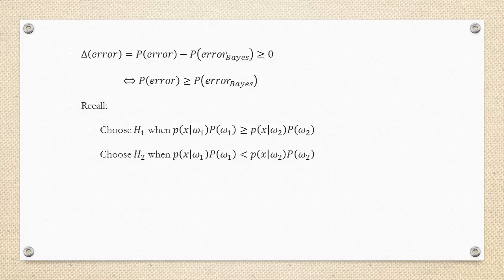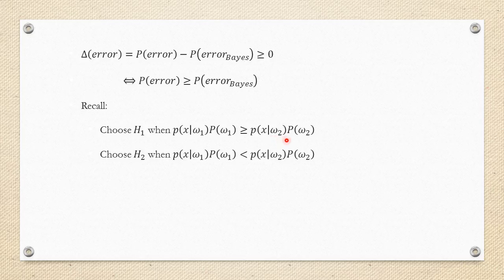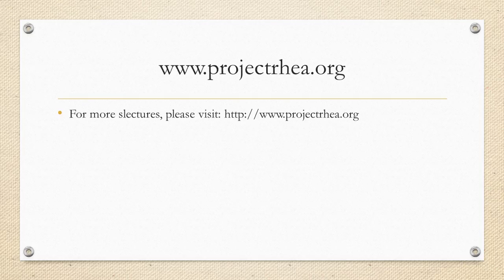So we choose hypothesis 1 when the PDF given omega 1 multiplied by the prior P(omega 1) is greater than the PDF given omega 2 multiplied by the prior P(omega 2), and hypothesis 2 otherwise. That concludes this S lecture. I'd like to remind you that more S lectures are available at projectrea.org — thank you for listening.